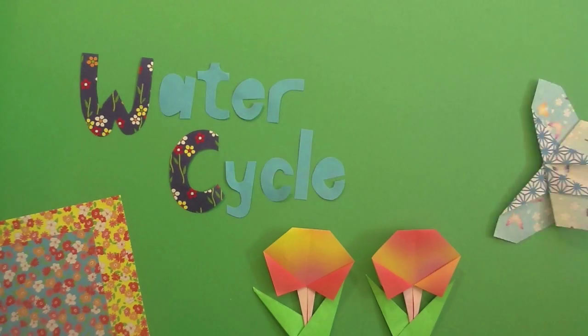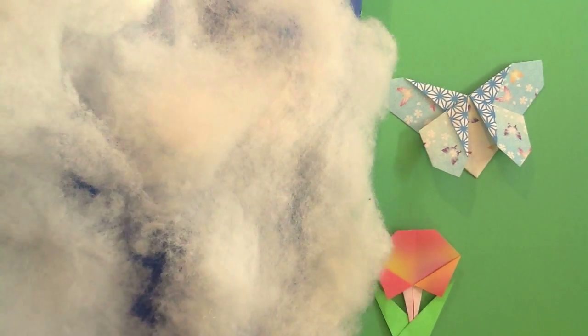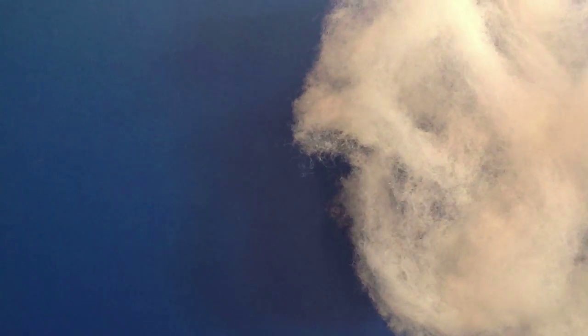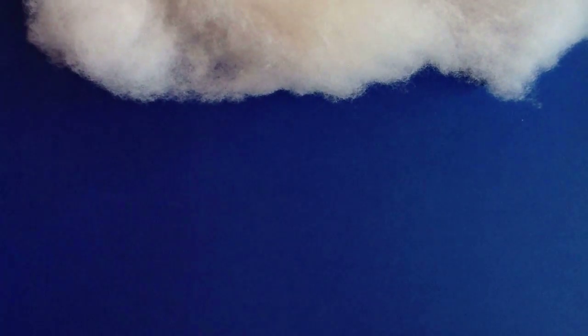The water cycle is the continuous movement of water on, above and below the surface of the earth.